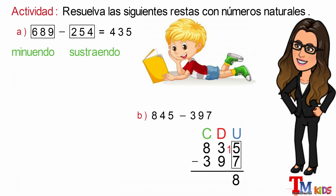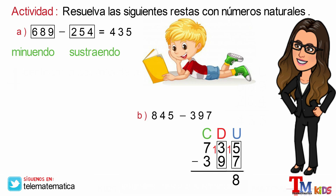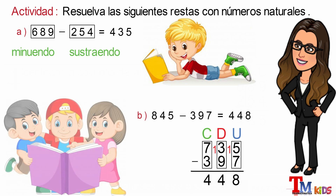Continuamos con la columna de las decenas, pero tampoco podemos restarle 9 al 3, entonces le pedimos una prestada a la centena. El 3 se transforma en 13 y el 8 se transforma en 7. Luego restamos 13 menos 9 es igual a 4. Por último, restamos la columna de las centenas: 7 menos 3 es igual a 4. Este resultado lo escribimos en la operación: 845 menos 397.